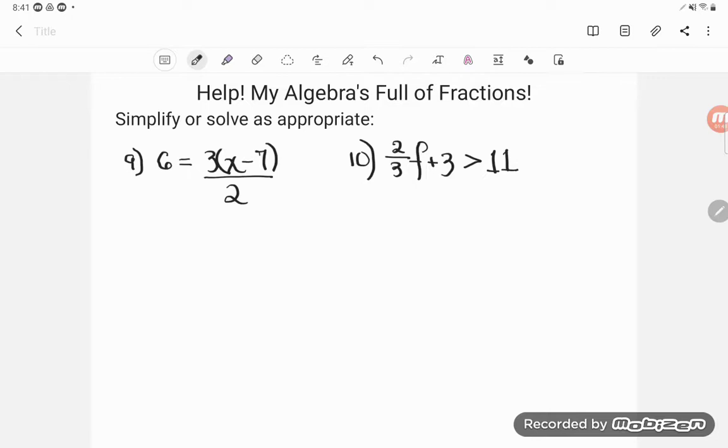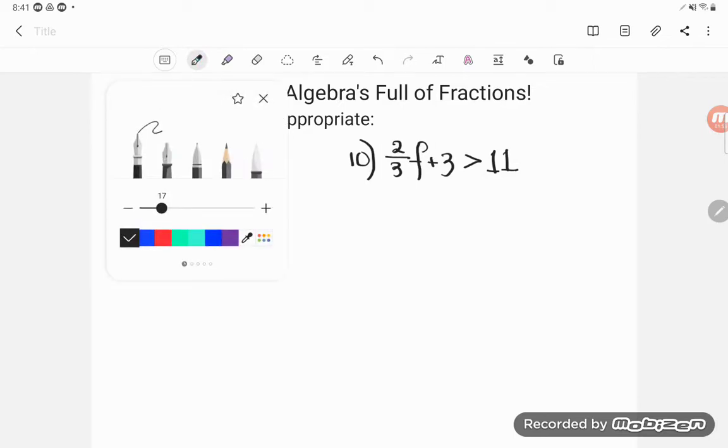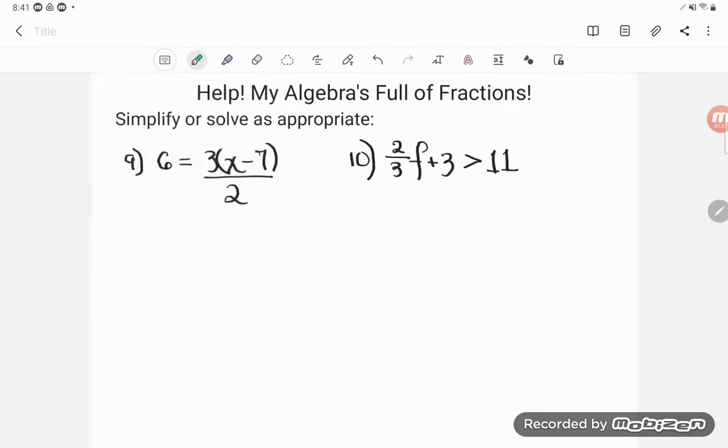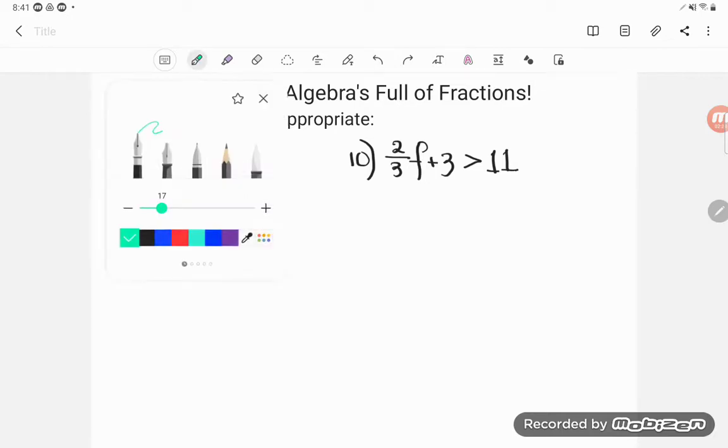So this is what I noticed with number nine. Number nine is an equation. Let me show you how I see that. I can see that I have one mathematical expression set equal to another mathematical expression. That, by definition, is an equation. Equations can be solved. When I know the relationship between two expressions, I can solve the mystery and figure out what x is equal to. So that is my goal. I'm going to be solving here because it's an equation I can solve.